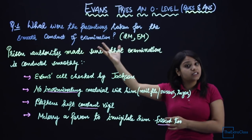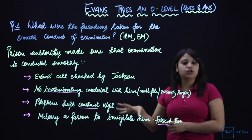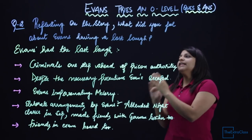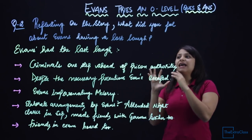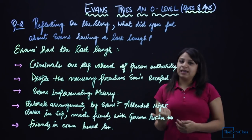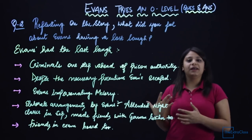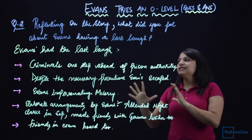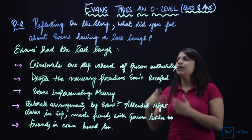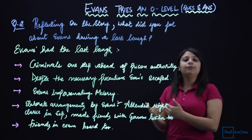This was the first textbook question — the same question has been asked by CBSE in 2-marks and 5-marks form. The next question is from 'Reflecting on the Story': What did you feel about Ivan's having a last laugh? What do you understand from the question — what do you feel about Ivan's last laugh? What is the reason behind it, or what made him laugh? We will write in which way Ivan was so clever and how he managed to escape. This question generally comes to test your reading skills — if you know the chapter, you can answer it.